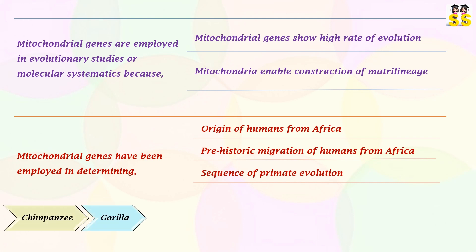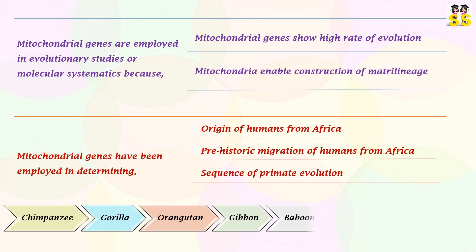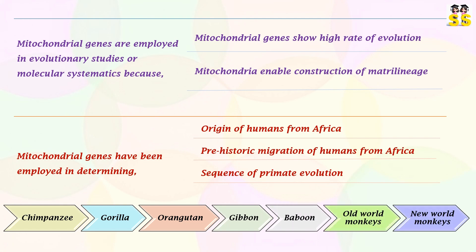The sequence of primate evolution includes chimpanzee, gorilla, orangutan, gibbon, baboon, old-world monkeys, and new-world monkeys.